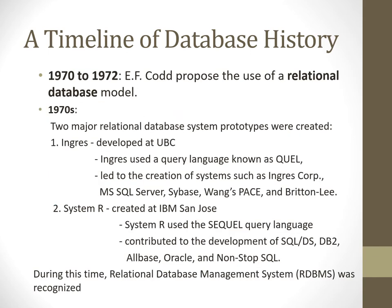Sometime in 1970 to 1972, a man named E.F. Codd proposed the use of the relational database model. During this time there were two major relational database system prototypes created: the first was Ingress, developed by UC Berkeley, and the second was System R. Both are relational database systems that have been adapted into modern database systems. Ingress is the basis for Microsoft SQL Server and other popular databases, while Oracle follows System R. The relational database management system was recognized and became very popular since then.